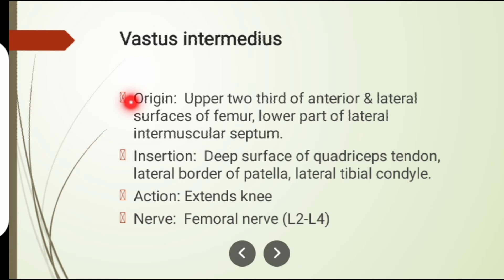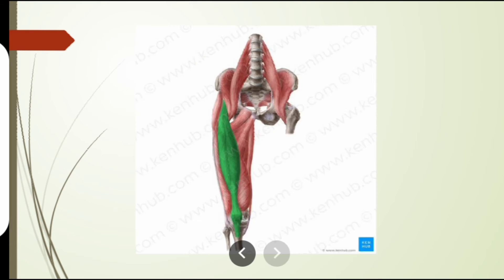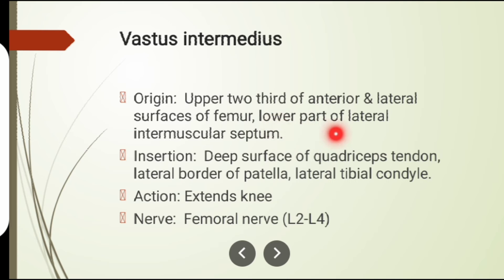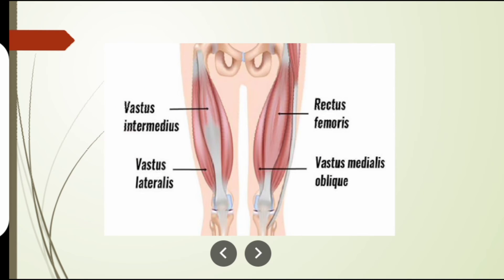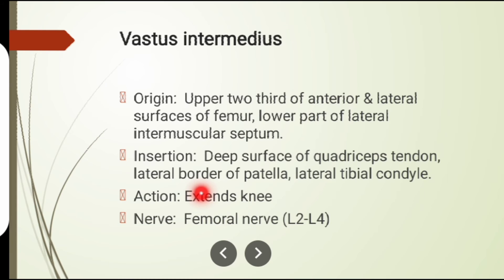Vastus intermedius is the next muscle involved in knee extension. Its origin is from the upper two-thirds of the anterior and lateral surface of the femur and the lower part of the lateral intermuscular septum. Its insertion is on the deep surface of the quadriceps tendon, lateral border of the patella, and lateral tibial condyle. Nerve supply: femoral nerve.